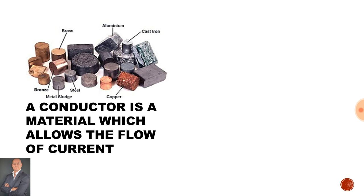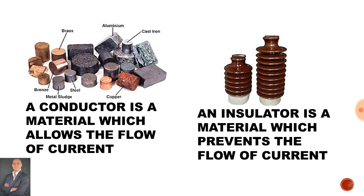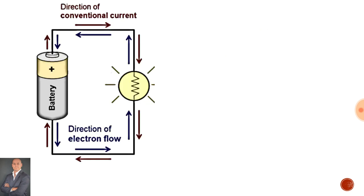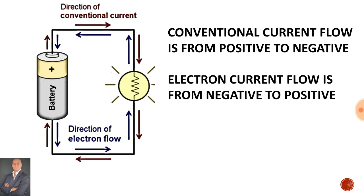A conductor is a material which allows the flow of current, such as copper. An insulator prevents the flow of current, such as glass or porcelain. Conventional current flow is from positive to negative, while electron current flow is from negative to positive.